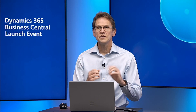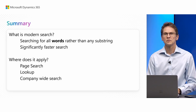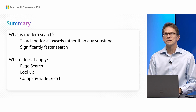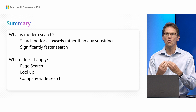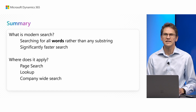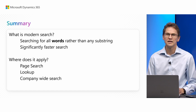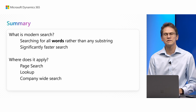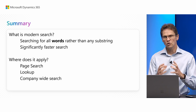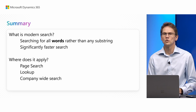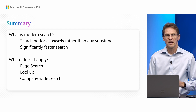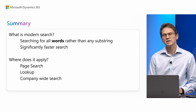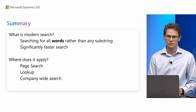First, what is modern search? In this release we have added a method to search for all words rather than any substring in a word. It's a significantly faster way of searching and it also tends to match more what you've come to expect from other search engines. This new search mechanism applies to page search, lookup, and company-wide search.